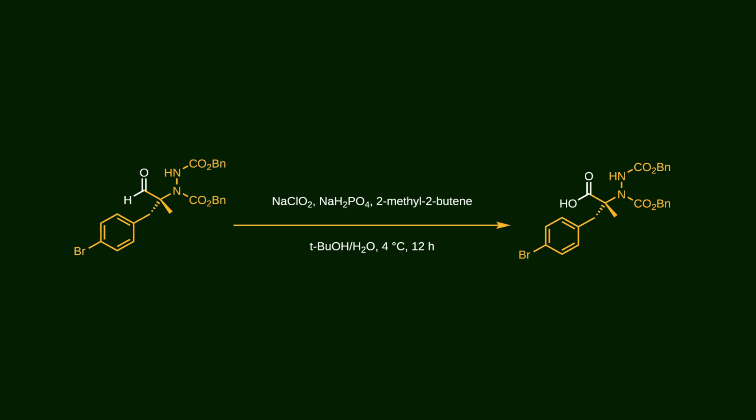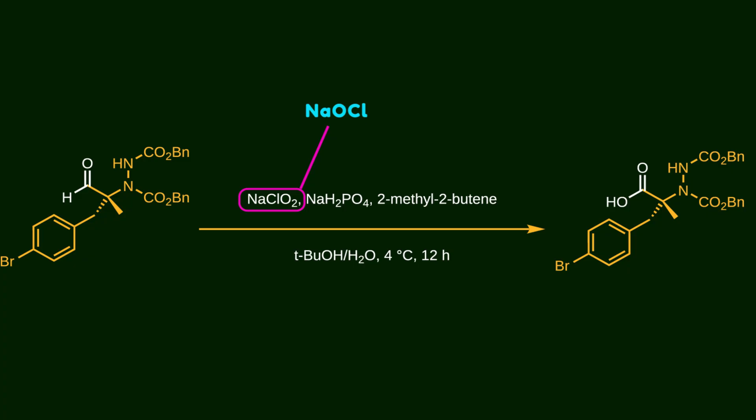Now the aldehyde is converted to carboxylic acid using sodium chlorite. In this process, it forms sodium hypochlorite which is even more reactive than sodium chlorite. So it must be quenched by 2-methyl-2-butene.